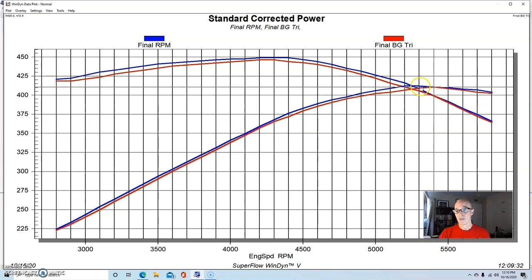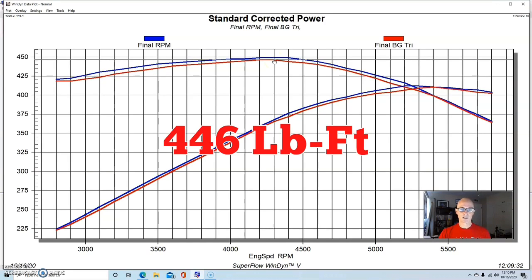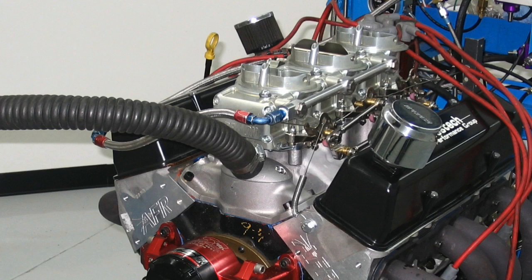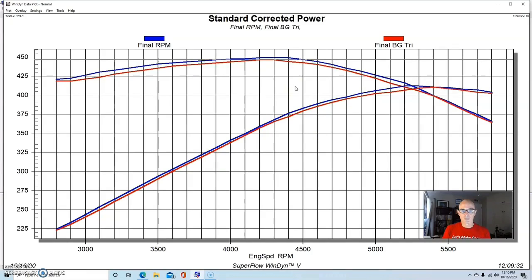It made 410.5, so 411 horsepower. Torque was down just slightly, 446 foot-pounds, and made a little bit less through most of the curve. But basically had the same shape and kind of the same power output. So what that would tell me is if a guy's putting this tri-power setup on there and running around with his small block Chevy, he's actually going to do pretty well.